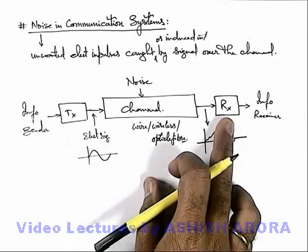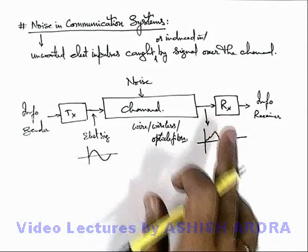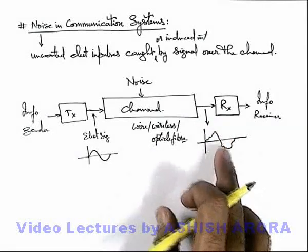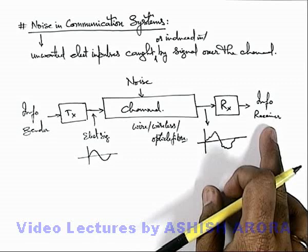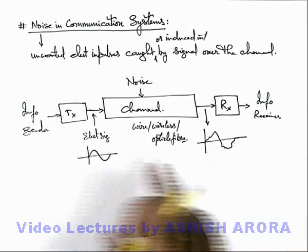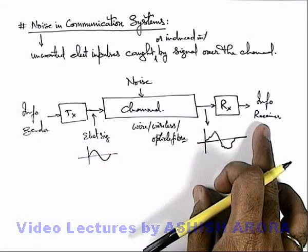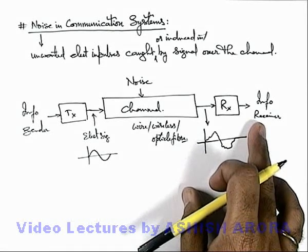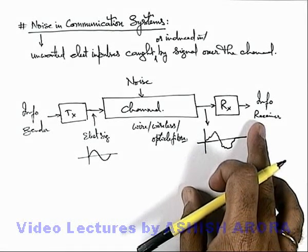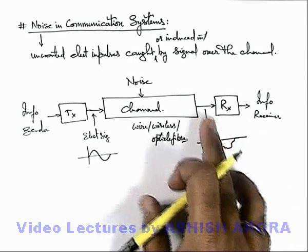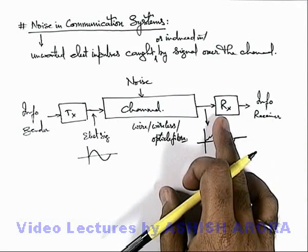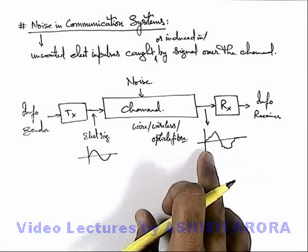When the distorted signal is fed to the receiver, there must be a noise suppression filter or noise filter used. Otherwise, the final information received is in distorted form. If it is a voice channel, crackling or feeding of voice will occur. If it is a picture or video signal, some blurredness or snow feeding would be present. So for proper reception of information, there must be a mechanism to reduce noise.